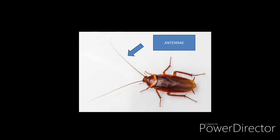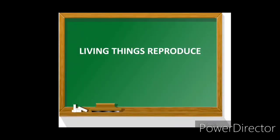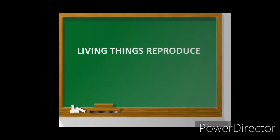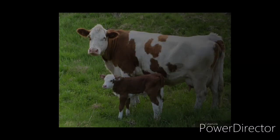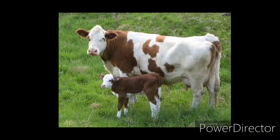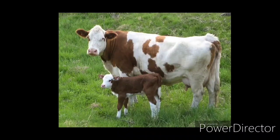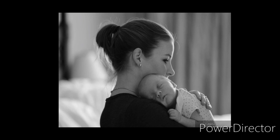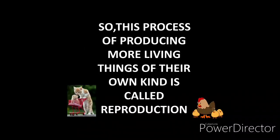Now we will study how living things reproduce. Living things produce more living things of their own kind. Like babies of cow resemble their mother. Human beings give birth to babies that grow into adults. Like if you are a child, you will resemble your mother or your father. This process of producing more living things of their own kind is called reproduction.